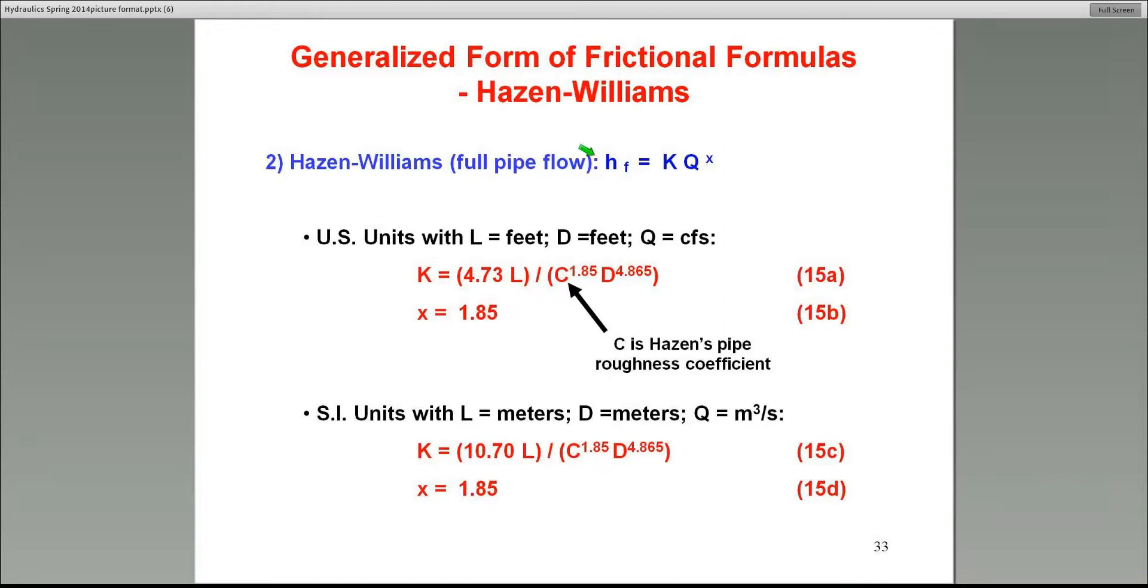Primarily because this Hazen roughness coefficient can be fixed or held constant with minor adjustments for the pipe flow velocity. Now, Hazen-Williams is the same type of equation in the same form, where K is equal to 4.73L divided by C to the power 1.85 D to the power 4.865. Make sure you calculate this very carefully for each problem because I do not have a physical interpretation of K. Therefore, we do not know if we got it right or wrong. L is the length of the pipe in feet. C is the Hazen's roughness coefficient. I'll show you a table. You can get it from there. And D is the pipe diameter in feet, not in inches, but in feet. The exponent, don't forget, is 1.85.